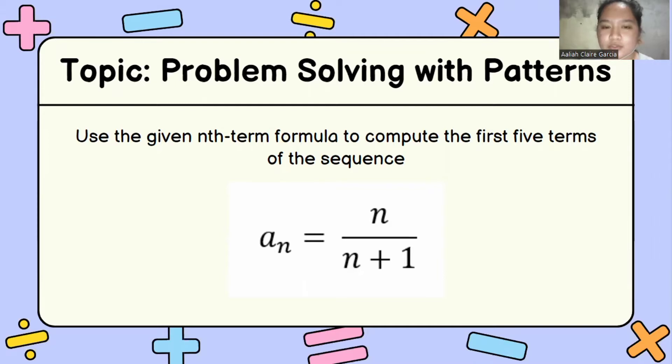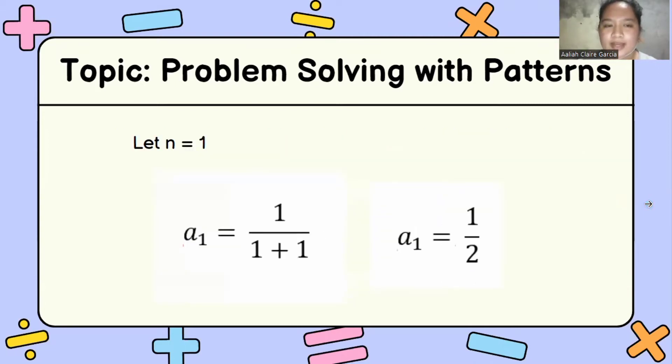we just need to substitute n to 1, 2, 3, 4, and 5. So to get the first term, let n is equal to 1. a sub 1 is equal to 1 over 1 plus 1. a sub 1 is equal to 1 over 2 or 1 half.